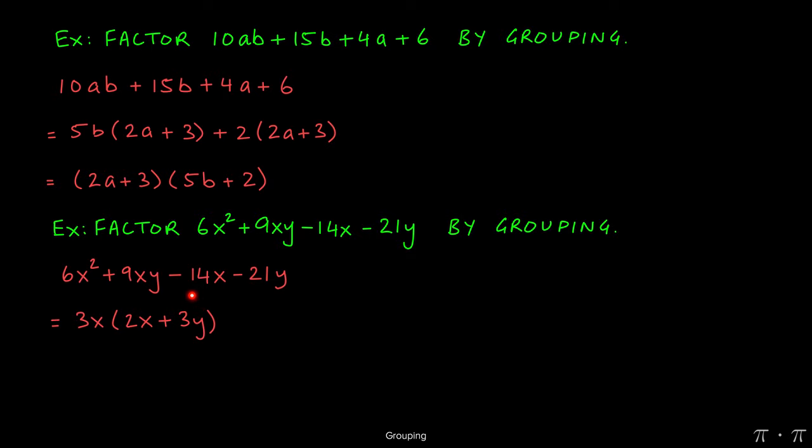For the second group, 14 and 21 both have 7 as a common factor. We factor out 7, then divide each term by it: -14x ÷ 7 = -2x, and -21y ÷ 7 = -3y.